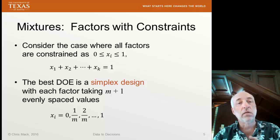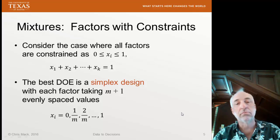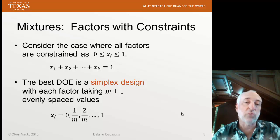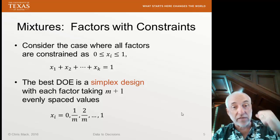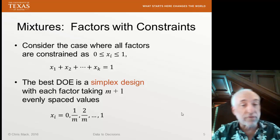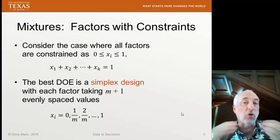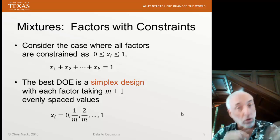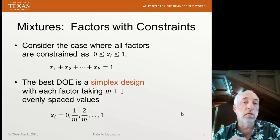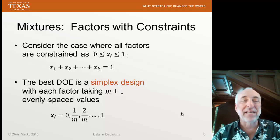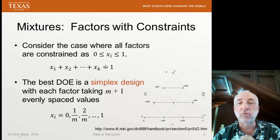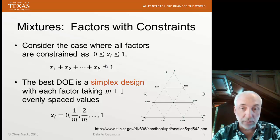In the simplex design, we divide each factor into m segments, producing m plus one evenly spaced points. For example, with three segments, each concentration could have a value of zero, one-third, two-thirds, or one — four different possibilities. We then find all combinations of all factors at these evenly spaced values such that every combination adds up to one. Here's a graphical representation of what that looks like with three different components broken into three levels.